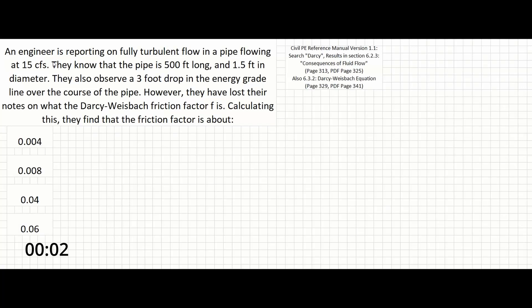In this problem, an engineer is reporting on fully turbulent flow in a pipe flowing at 15 cubic feet per second. They know that the pipe is 500 feet long and 1.5 feet in diameter. They also observe a 3-foot drop in the energy grade line over the course of the pipe. However, they have lost their notes on what the Darcy-Weisbach friction factor F is. Calculating this, they find that the friction factor is about: